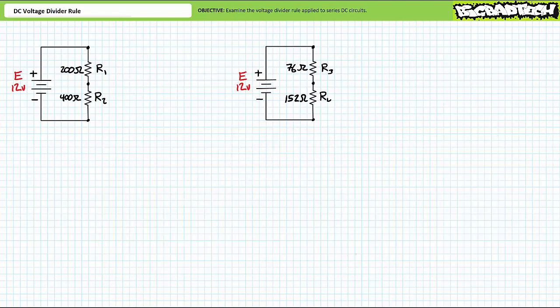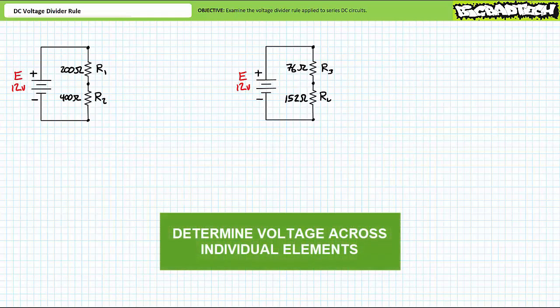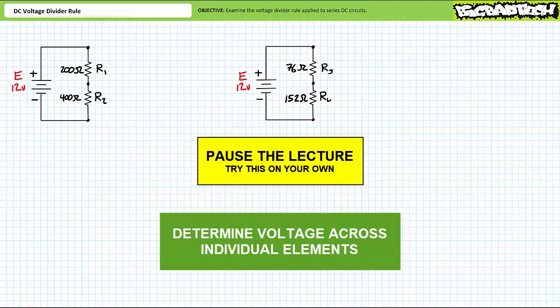As a preparatory exercise, consider these two series circuits. I invite you to solve for the voltage drop across each individual element in this system using the quickest and most direct means available. I am interested only in the voltage drop across each element — not total resistance, current, nor power. All I want to know is the voltage drop across each individual element in these systems. By all means, pause the lecture and try this on your own.